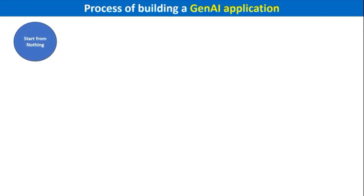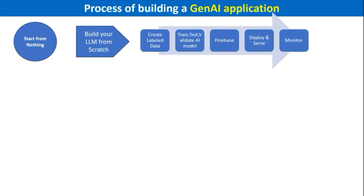Number one: start from nothing. Here you build your own LLM from scratch. The process begins by collecting and preparing labeled training data, where each input is associated with the correct output, followed by training, validating, fine-tuning, and retraining until we get our perfect model, and then deploy, serve, and monitor. As far as timeline is concerned, this approach can be time-consuming, requiring 9 to 12 months, as it involves extensive data preparation and model training.